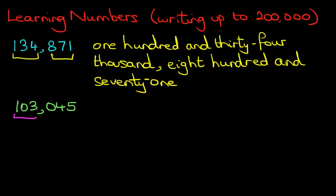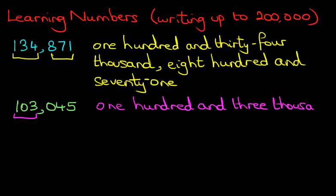So we've got the first part, which is one hundred and three thousand. There we go. One hundred and three thousand. The next stage is and forty-five. We don't need to put a comma here. We just write down and forty-five.